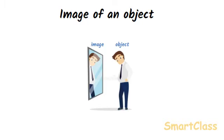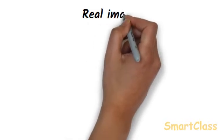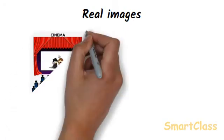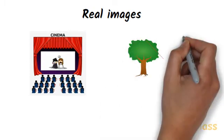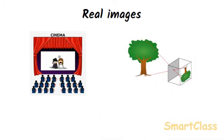There are two types of images that can be formed with light: real images and virtual images. Real images: The image which can be obtained on a screen is called a real image. In a cinema hall, we see the image of actors on the screen, so the image formed on a cinema screen is an example of a real image. The image formed in a pinhole camera is also a real image.